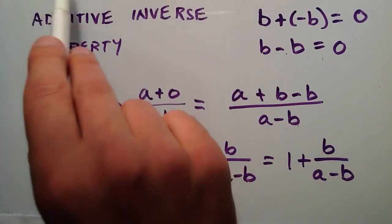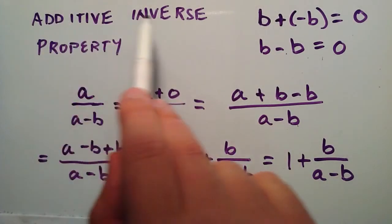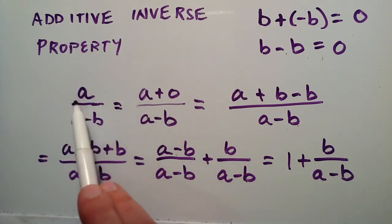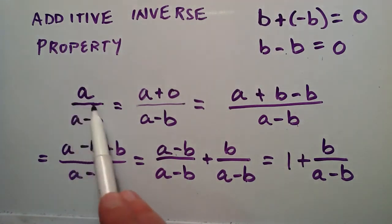So by using the addition property of zero and the additive inverse property, we were able to take an expression that looks like this, a divided by a minus b,